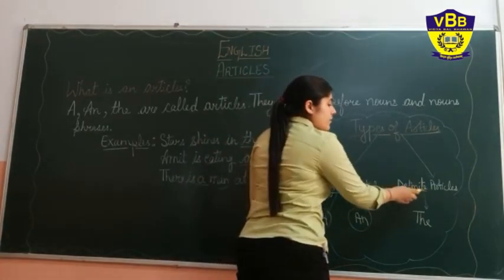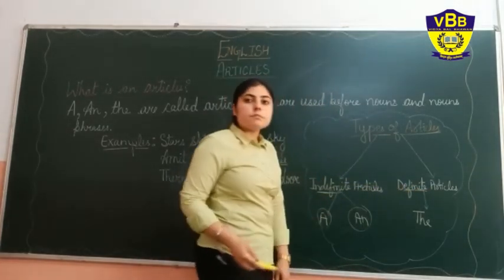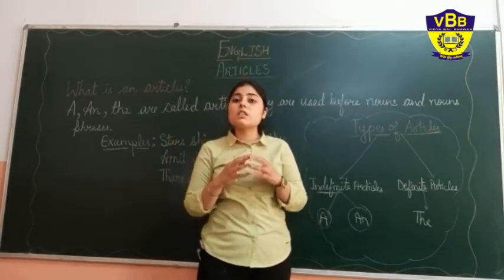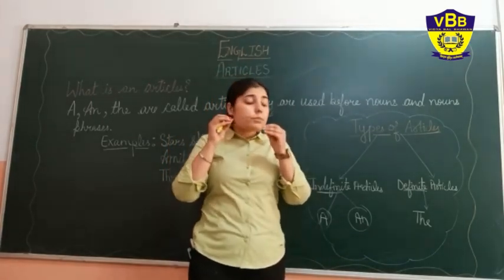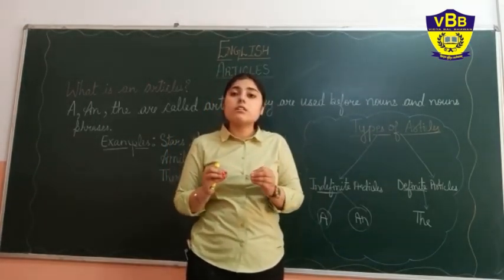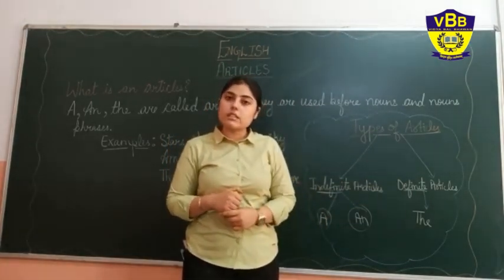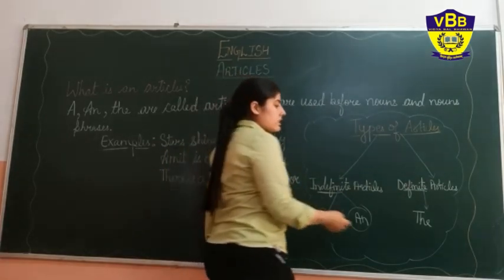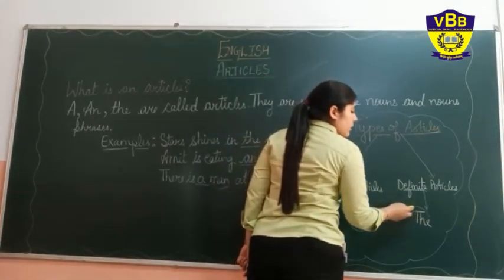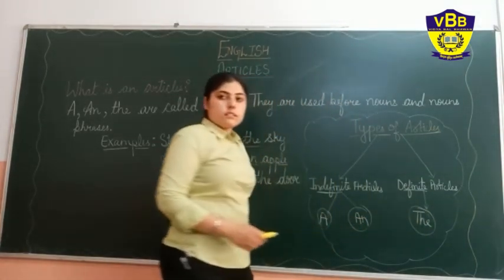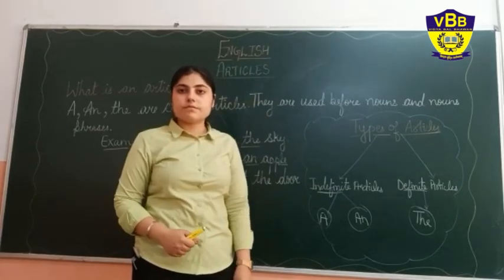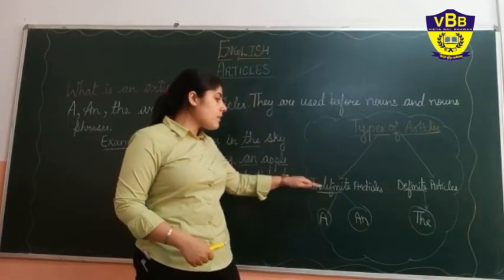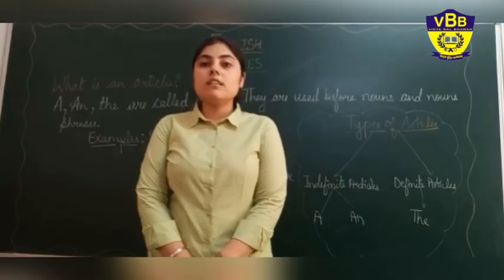And definite articles mean something which is specified, something which is particular. The definite article is only one: 'the'. So, two types — indefinite and definite.